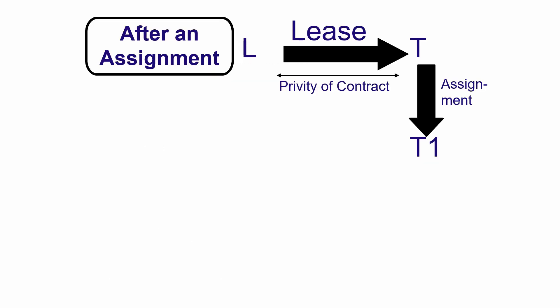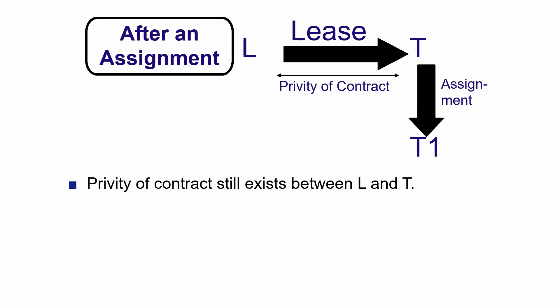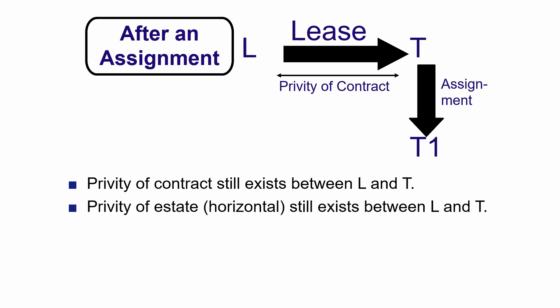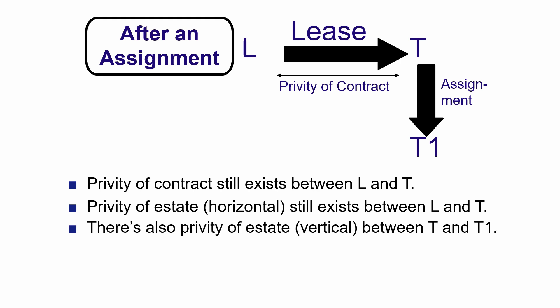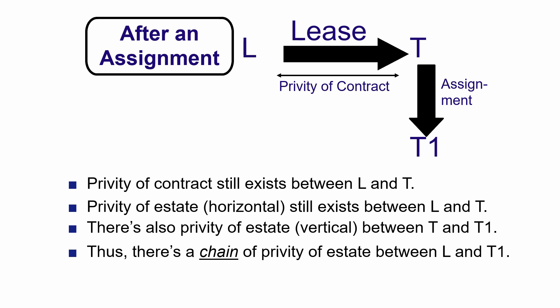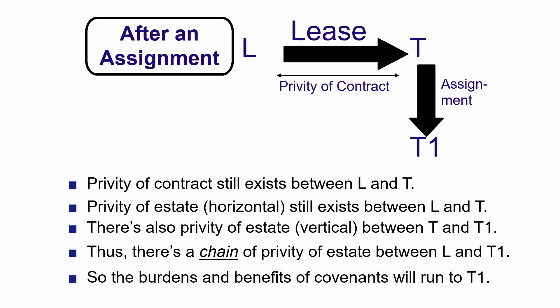Suppose the original tenant assigns the entire leasehold estate to T1. Privity of contract still exists between the original landlord and tenant, and horizontal privity of estate remains. Now there is also vertical privity of estate between the original tenant and T1. So there's a chain of privity of estate between the landlord and T1 — consisting of the original lease and the assignment. The burdens and benefits of covenants that touch and concern the land will run to T1, meaning T1 can sue the landlord and the landlord can sue T1.